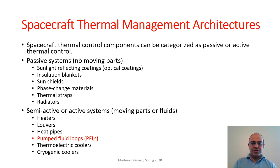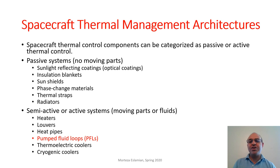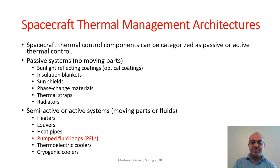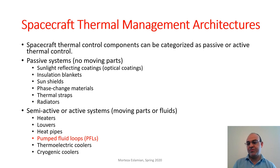Some other systems are semi-active or active, meaning they may have moving parts, moving fluids, or even moving electrons. Examples are heaters — they are powered, so they are active — and louvers, which have mechanically actuated parts. We also talked about heat pipes. Interestingly, heat pipes can be considered both passive and active: passive because they have no mechanically moving parts, but active because fluids move through them. They are more complicated than thermal straps.